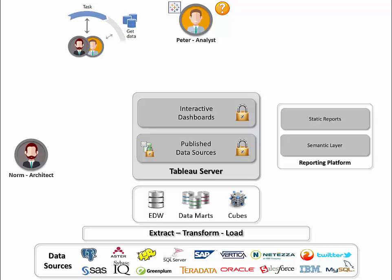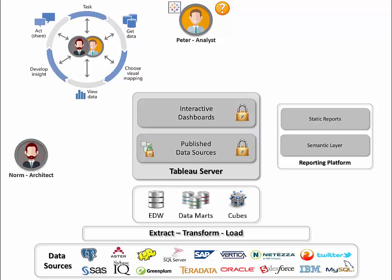This allows Peter to spend time answering his own questions via the cycle of visual analysis. Peter starts with a question, gets some data, chooses a mapping, views the data, but realizes he needs to go back to get more data before going on to author and share his insight. Norm enables Peter to go down this non-linear process because he sees exactly what Peter's trying to do and provides the data Peter needs along the way. It's re-shifting the workload so both Peter and Norm focus on what they're not only good at but what they enjoy doing.